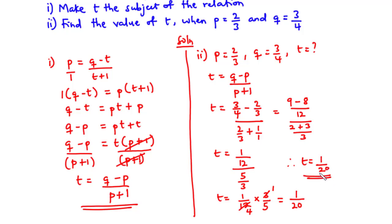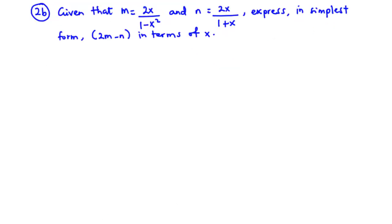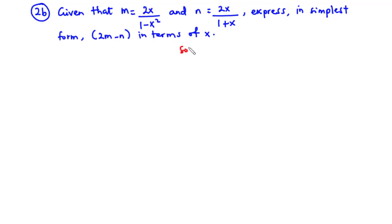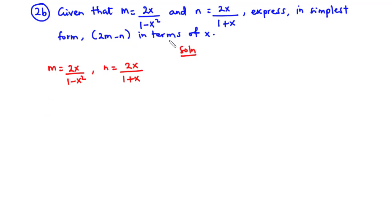Now let's move on to solve the b part. For 2b, given that m is 2x over 1 minus x squared, and n is 2x over 1 plus x, express in simplest form 2m minus n in terms of x. We are going to express 2m minus n in terms of x.